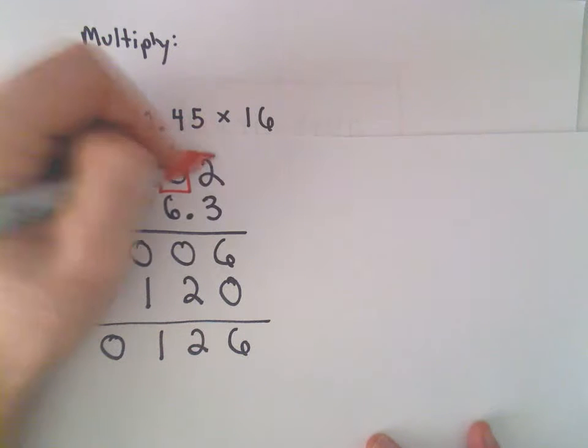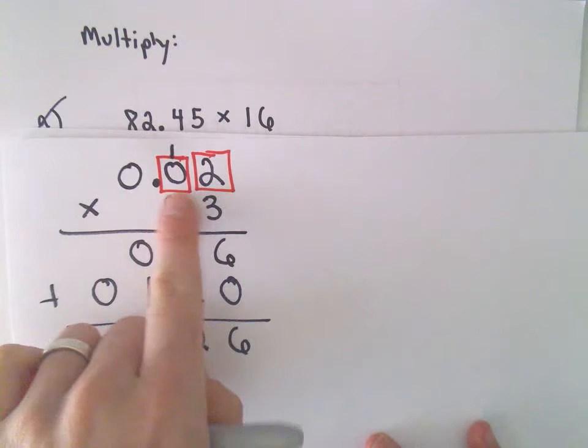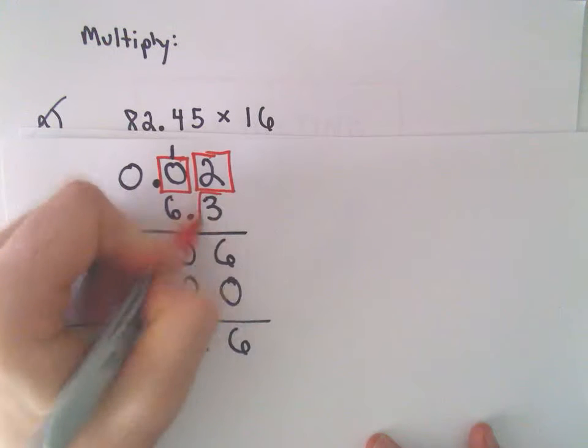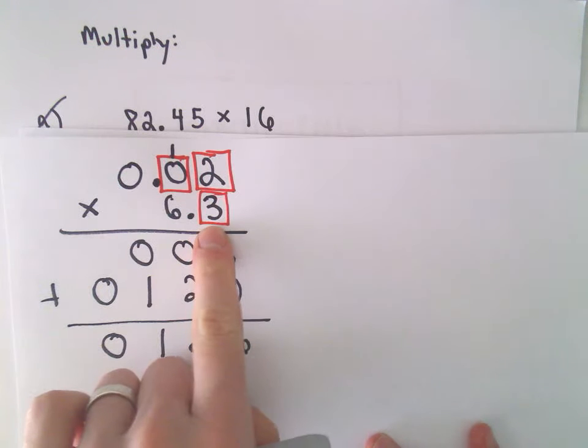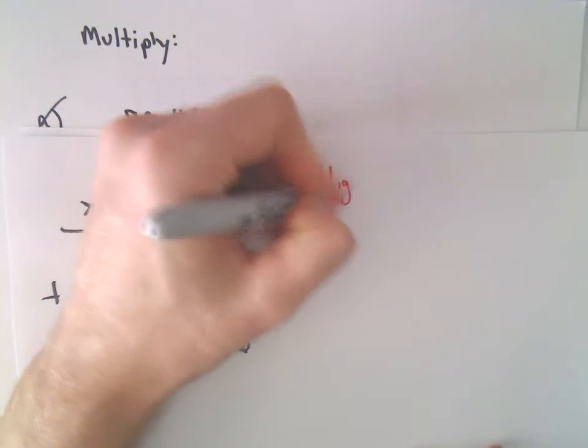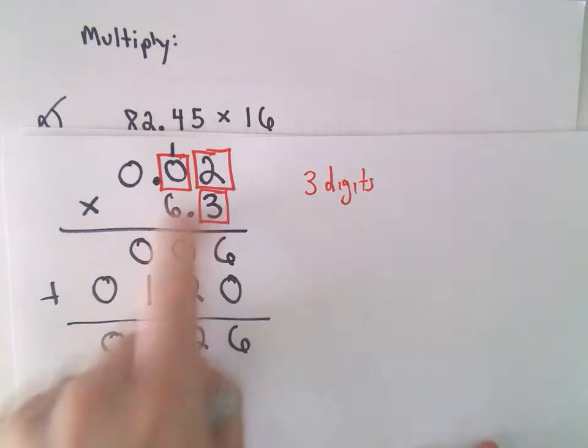Again, I see one digit, two digits to the right of the decimal sign in my first number. And then I see another digit to the right of the decimal sign in my second number. So I see a total of 3 digits to the right of my decimal signs.